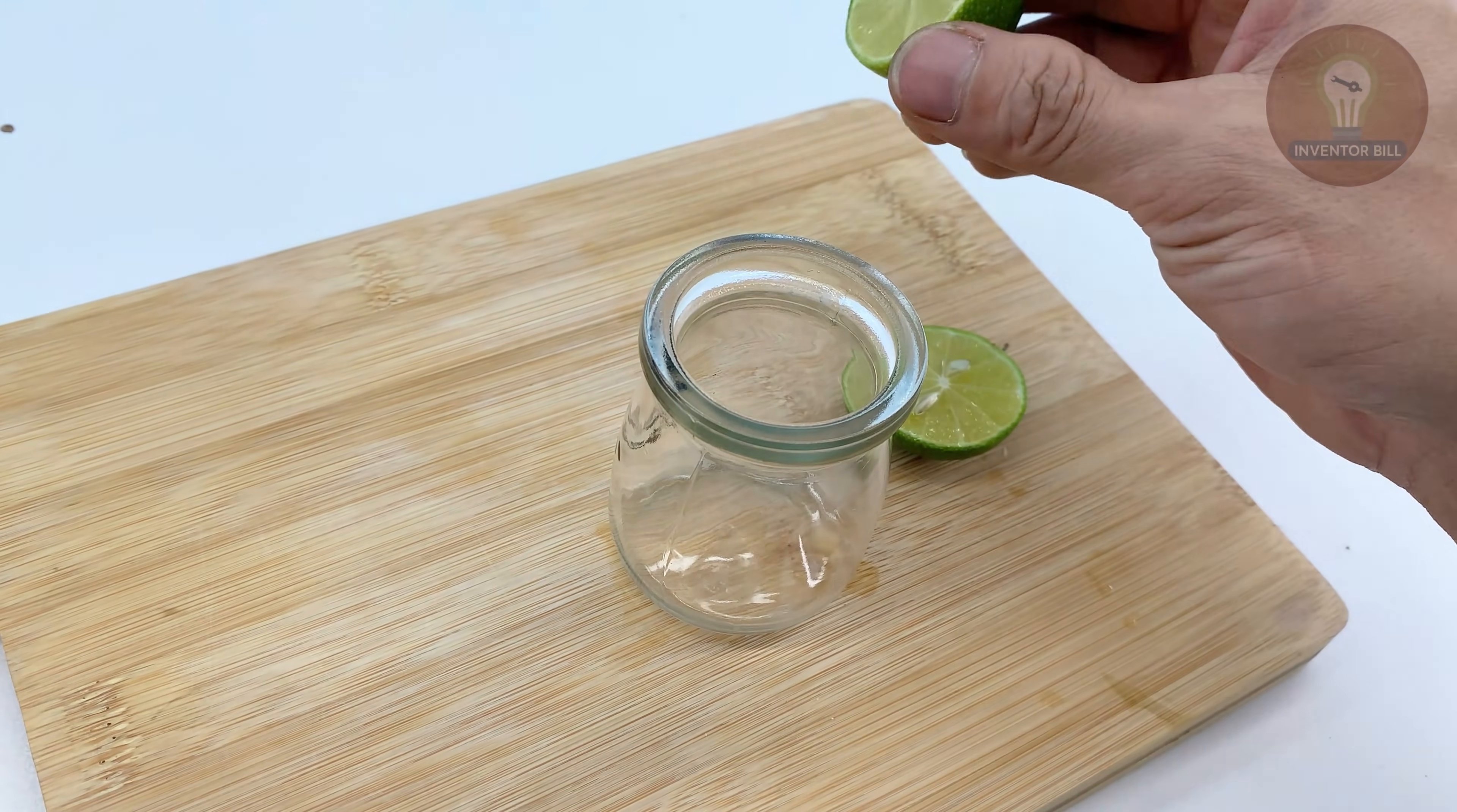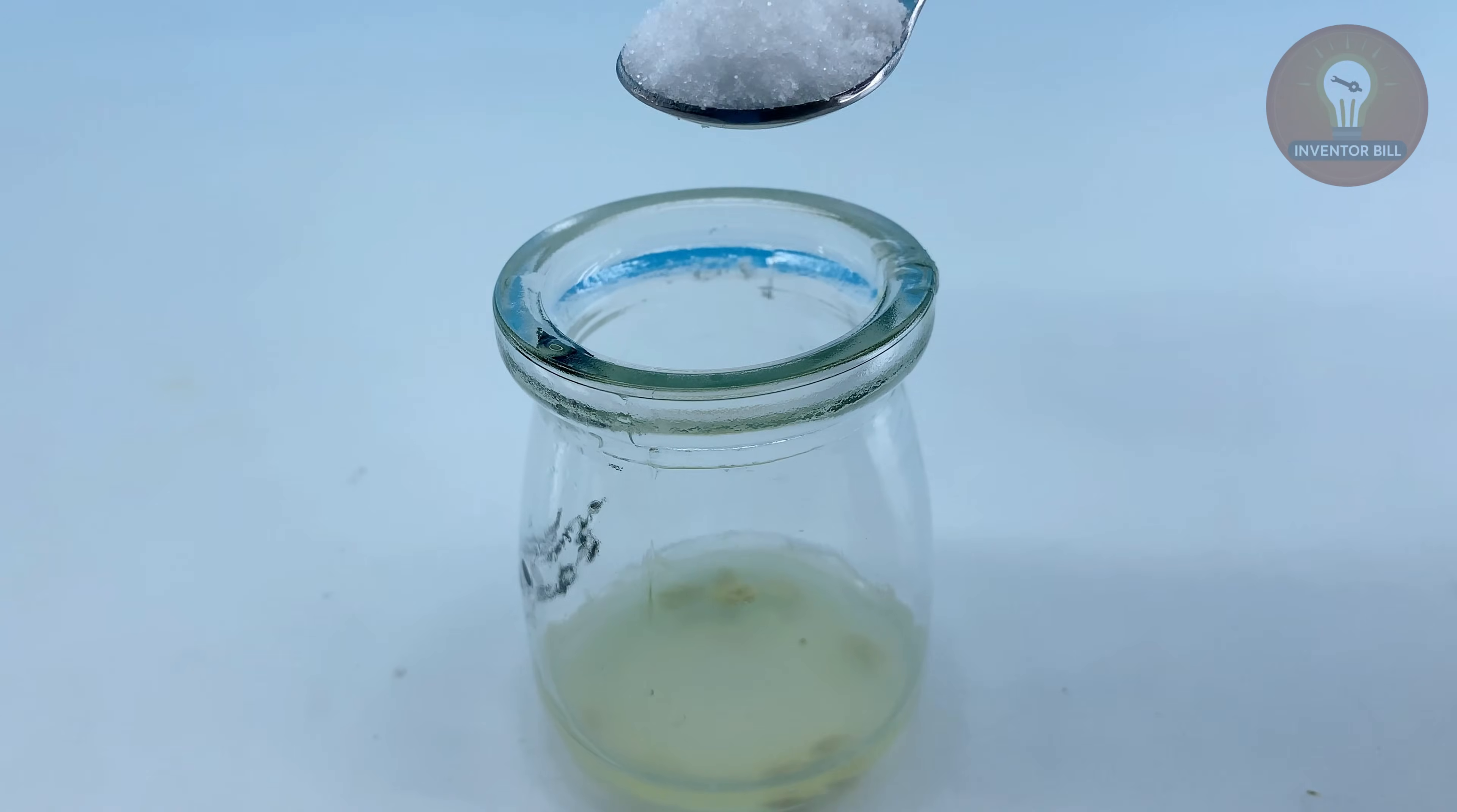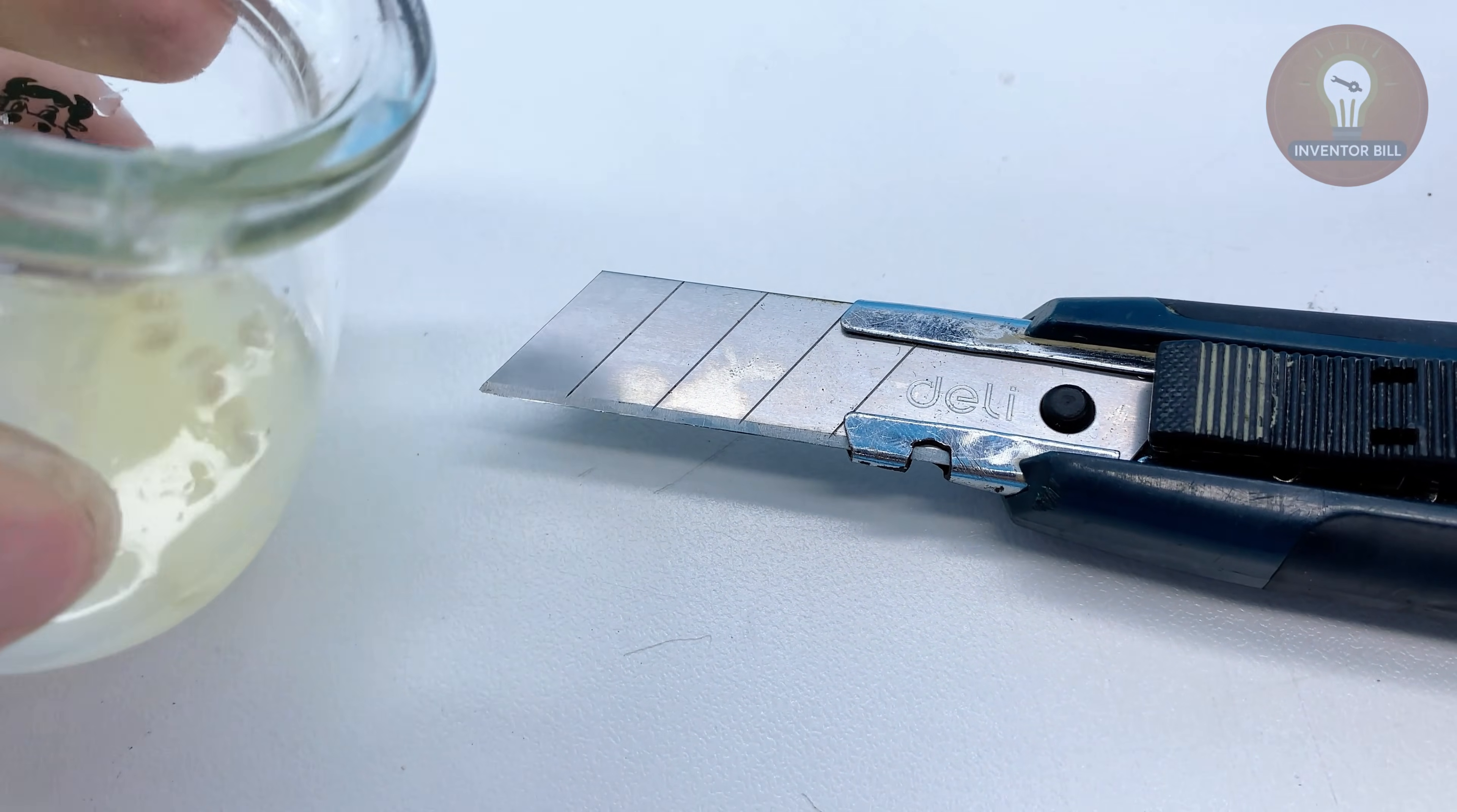Grab a glass cup, squeeze in the juice from half a lemon, and add about a teaspoon of salt. Pour in a little warm water and stir until everything dissolves. The lemon acid helps remove oxidation while the salt improves conductivity and bonding. This natural mix works just like commercial flux, but it's cheaper and safer to use at home.